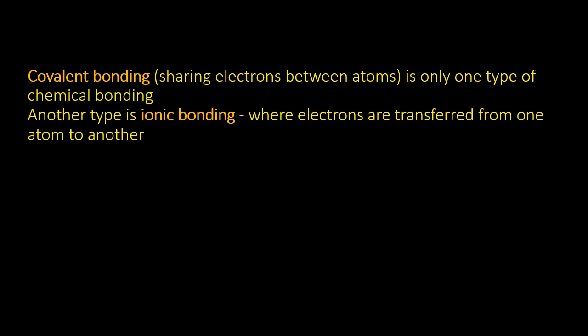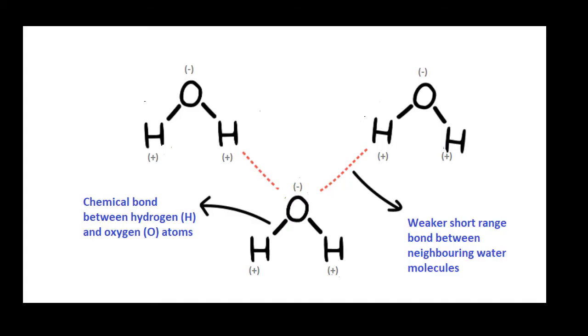OK, the bonding found in water molecules is covalent bonding, one type of chemical bonding. There's also ionic bonding, where electrons are completely transferred from one atom to another rather than being shared. But also the forces between individual molecules themselves, which are much weaker than chemical bonds, are also results of the electrostatic force.